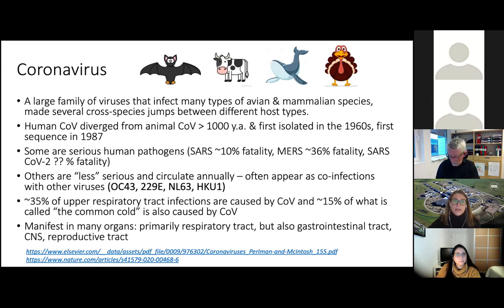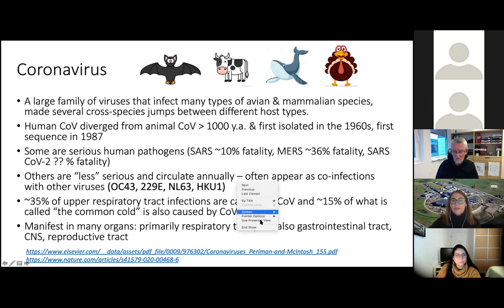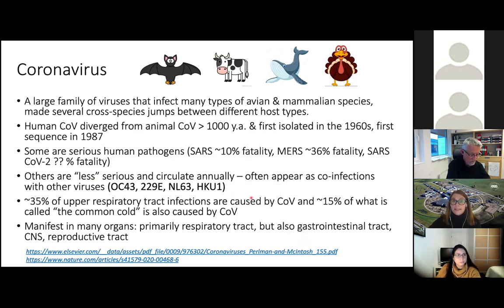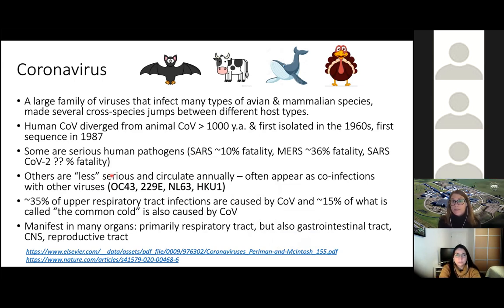Four other human pathogenic coronaviruses are considered less serious, especially in immunocompetent people, and circulate annually like flu and cold season, often appearing as co-infections with other viruses. In fact, upwards of 35% of all upper respiratory tract infections globally are caused by coronavirus, and as much as 15% of what we call the common cold is caused not just by rhinovirus but also by one of these four coronaviruses.